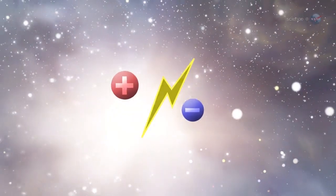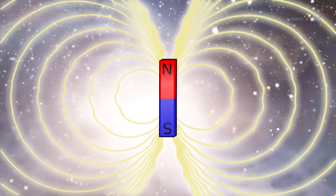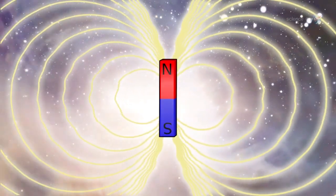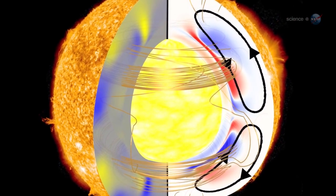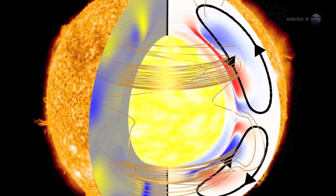The motions of the interstellar gas, which is an electric conductor, generate electric currents, which in turn generate magnetic fields. Similar currents move through the molten core of Earth and in the interior of the Sun, except this is on a vastly larger scale.